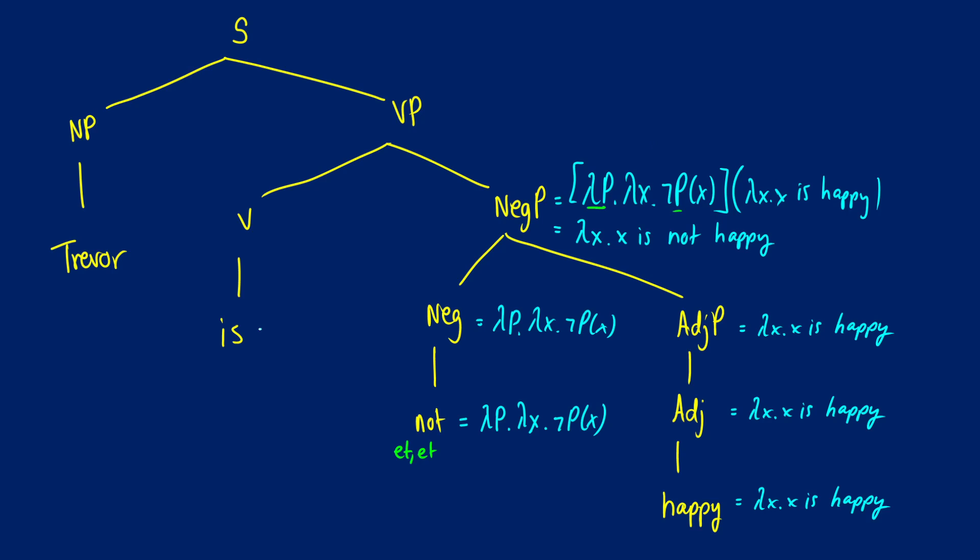Okay, now the rest of the tree is just going to be as normal. So is is going to be lambda p dot p, which we saw before with the copula. And there is another way to write this if you want. We could be writing this as lambda p dot lambda x dot px. We could be including this component if there's some binding reason. But for is, it's unnecessary. So with the VP, we're just going to apply things as normal. We're just going to end up still with lambda x dot x is not happy.